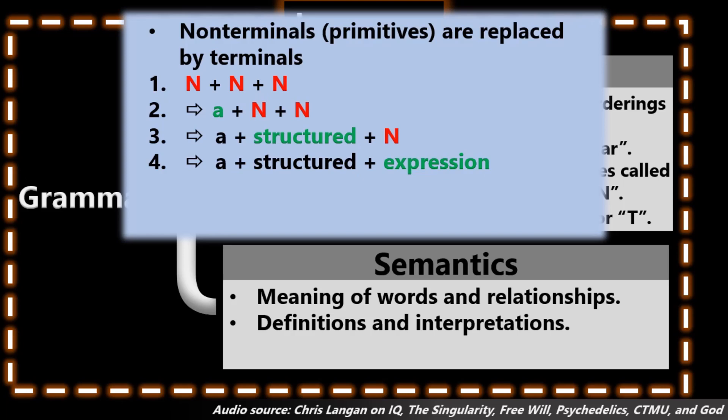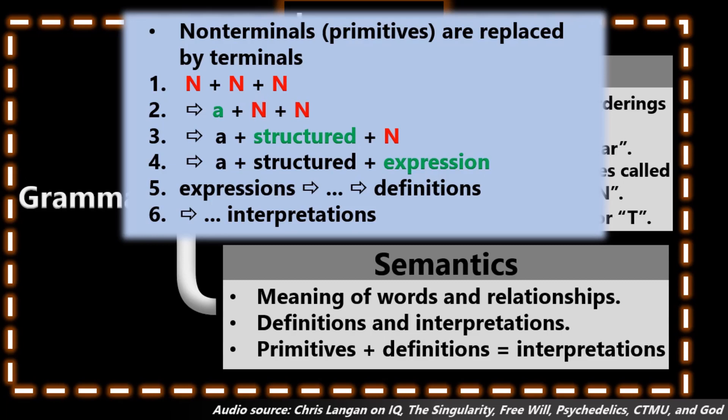The non-terminals are cognitively primitive, whereas when you get into semantics, now you're combining those primitives to get defined terms, to get definitions, then you're combining those in certain ways. And then once you form your expression, now you have to interpret it or form a model of it in some other structure that you've got. And so it's a big process.